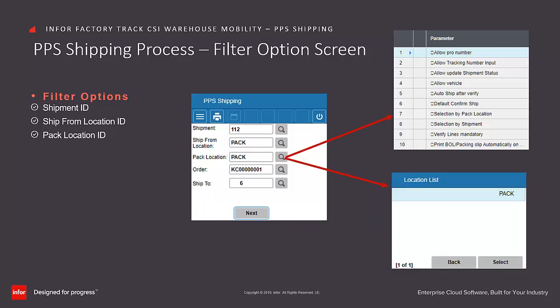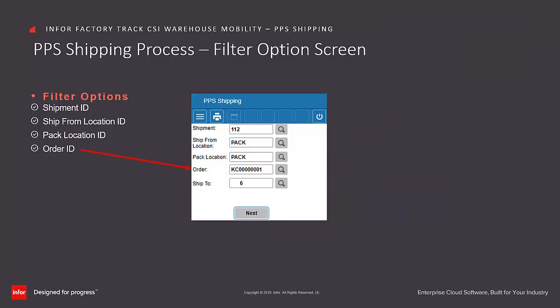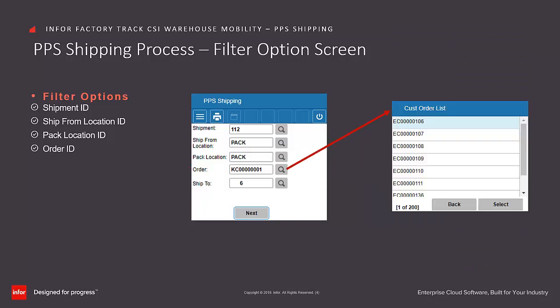The Packed Location field is made available if the Selection by Packed Location option is selected in the transaction set maintenance form. You can then enter, scan, or search the Packed Location ID. The Order ID field is always available — you can enter, scan, or search and select the order ID.